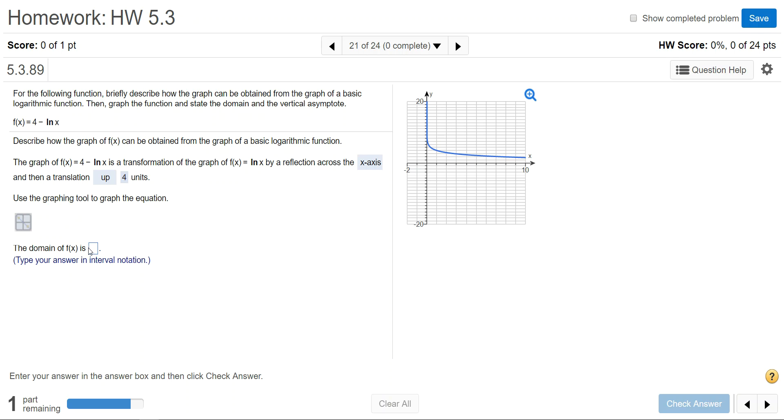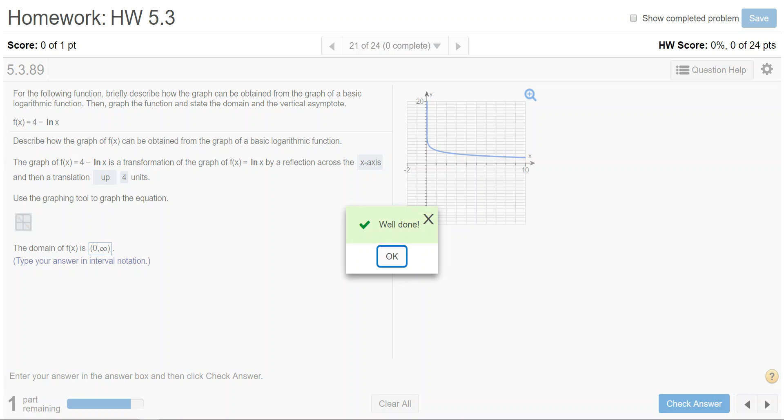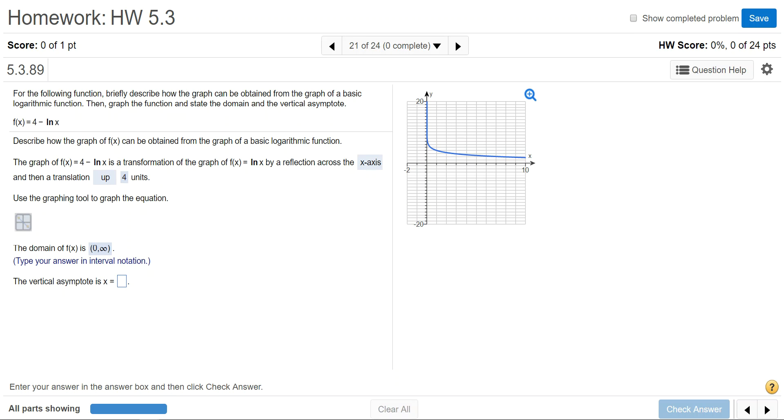Next it asks for the domain. The domain is left and right along the x-axis. This graph does not go left forever; it approaches x equals 0. So I'm going to select the parentheses interval, and in the first blue box put 0, tab, and then in the next blue box infinity. So it starts at 0 and goes right forever. Next, the equation of the vertical asymptote is x equals 0.